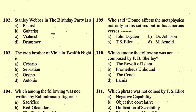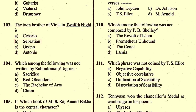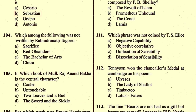Question number 102: Stanley Weber in 'The Birthday Party' is — the right option is A, a pianist. Question number 103: The twin brother of Viola in 'Twelfth Night' is — the correct option is B, Sebastian. Question number 104: Which among the following was not written by Rabindranath Tagore? The right option is C, 'The Bachelor of Arts'.